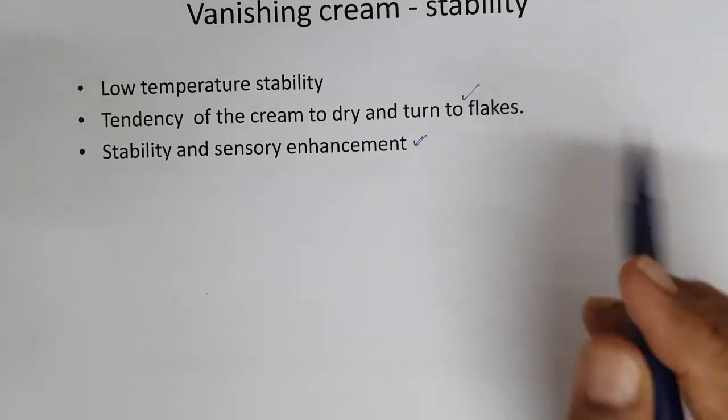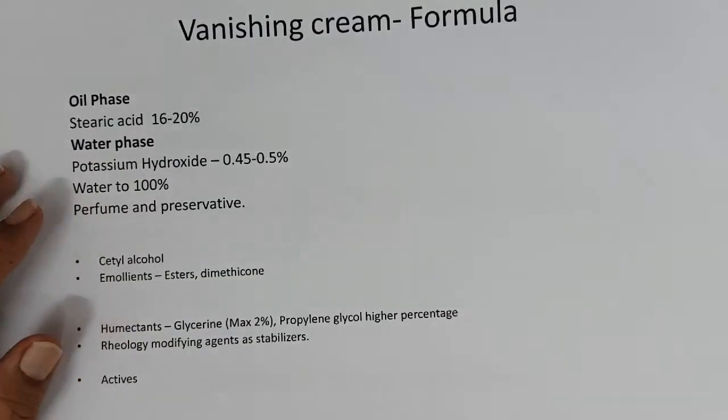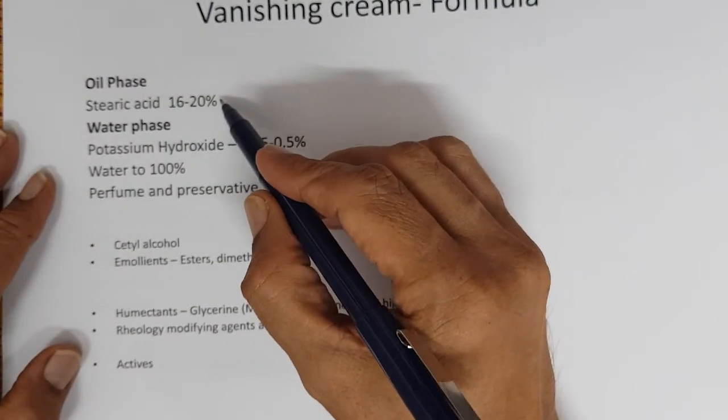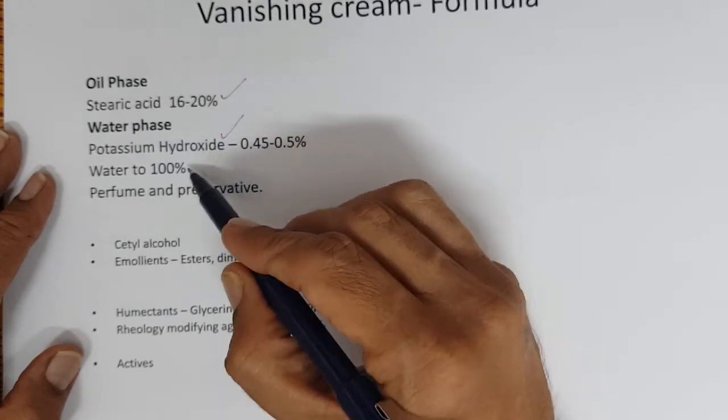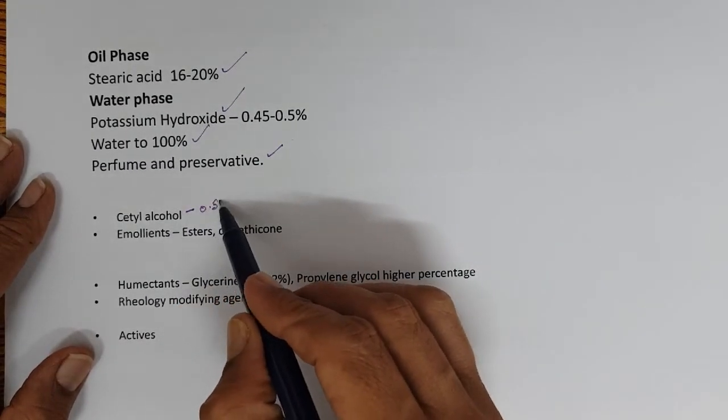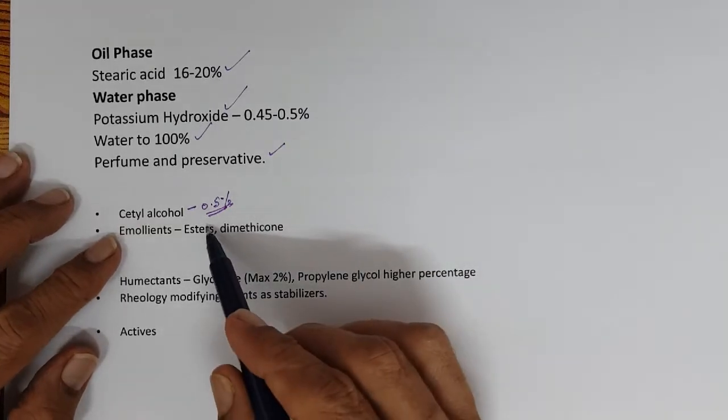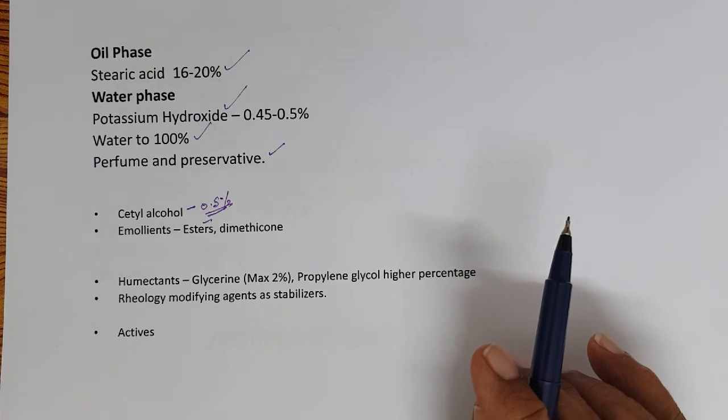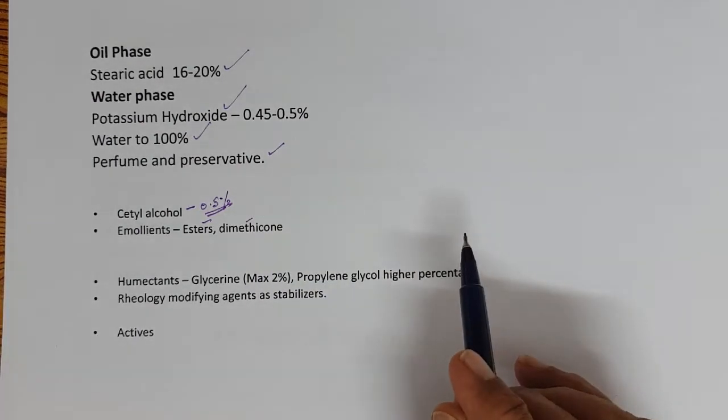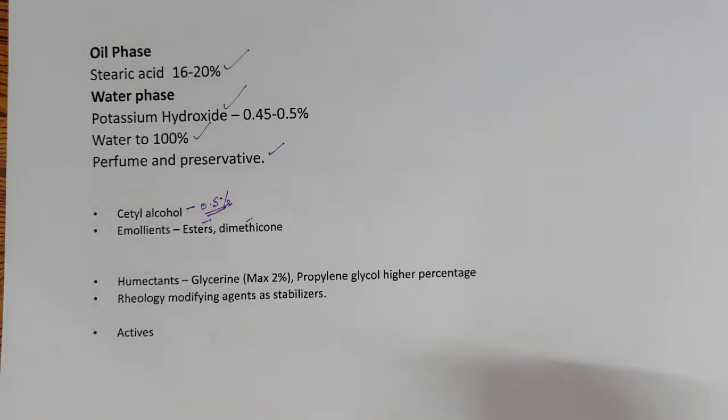Stability and sensory can be enhanced further. How can these be addressed in modern creams? This is the skeleton of the cream: 16 to 20% stearic acid, potassium hydroxide, water to 100%, preservatives and perfume. Now cetyl alcohol at 0.5% can be added to the formula that can stabilize it further. Then emollients like isopropyl myristate, isopropyl palmitate, emollient esters, dimethicones at less than 1% can be added to the product. But not to a higher level because it should not affect the dry matte feel of the product, you have to be careful.